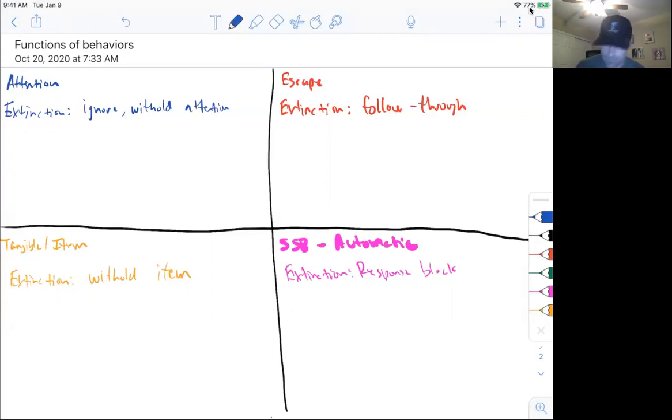And from here on out, you should never talk about a behavior, and you should never address a behavior or try to treat a behavior without knowing what function it is. So whenever you get supervised and your BCBA asks you, why is it happening? One of these four should be your answer.